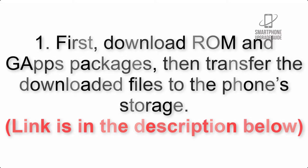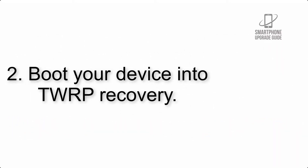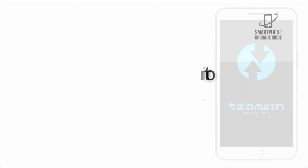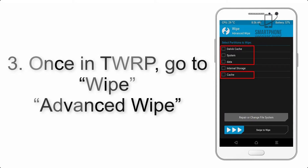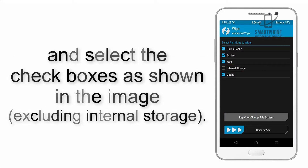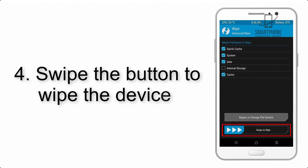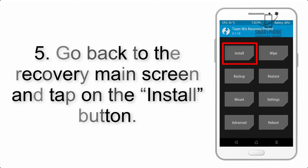Step 2: Boot your device into TWRP recovery. Once in TWRP, click on Wipe, then Advanced Wipe, and select the checkboxes as shown in the image, excluding internal storage. Step 4: Swipe the button to wipe the device. Step 5: Go back to the recovery main screen and tap on the Install button.